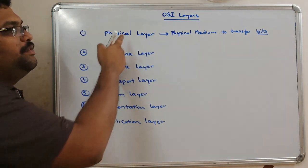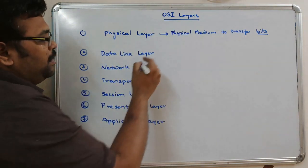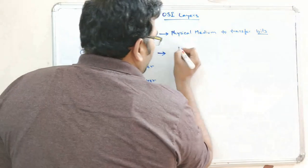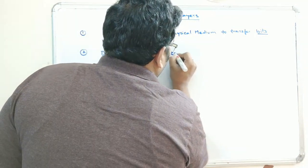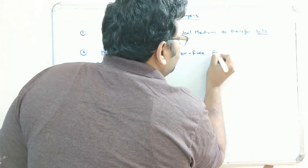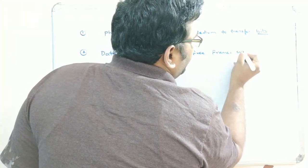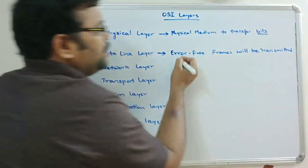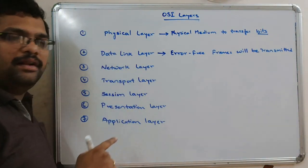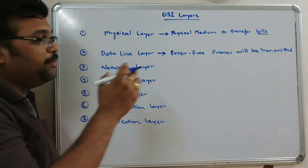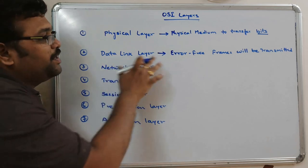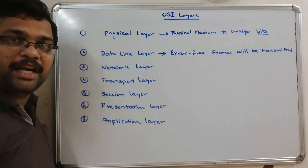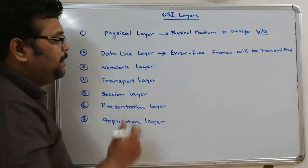In the physical layer, bits are transferred. In the data link layer, those bits are changed to frames, and error-free frames are transmitted. The error-free check is done in the data link layer — cyclic redundancy check and similar error-free techniques are applied to the bits, which are then converted into frames and transmitted from one system to another.